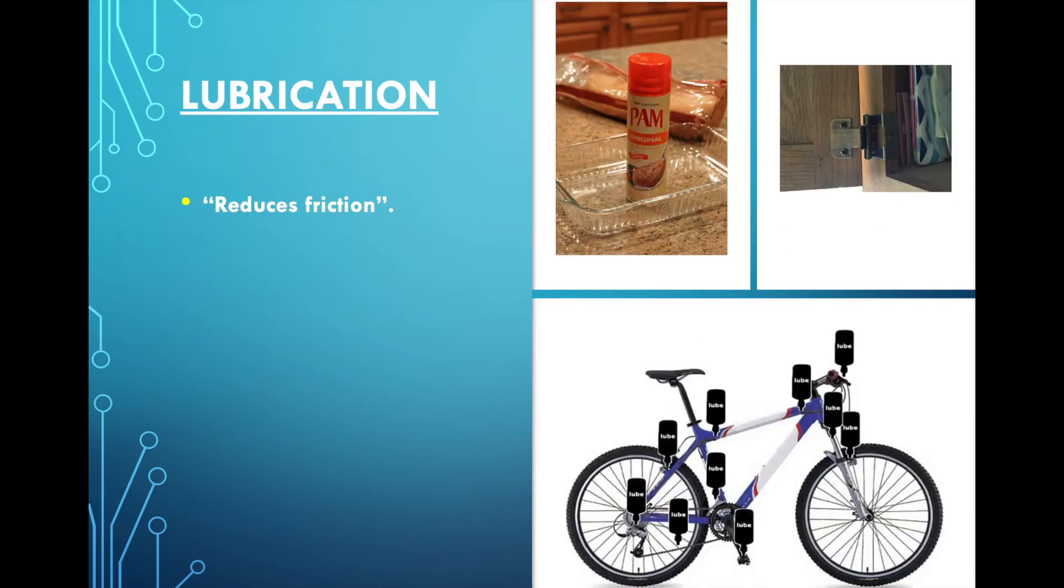Next, we have lubrication. So it's something that reduces friction. So when we cook, for example, we're going to put oil, butter, maybe Pam at the bottom of the container we're using to make sure that the food doesn't stick. So we're lubricating the pan, for example.